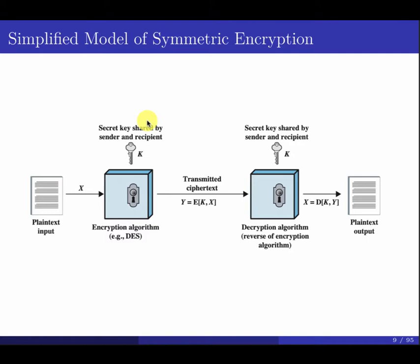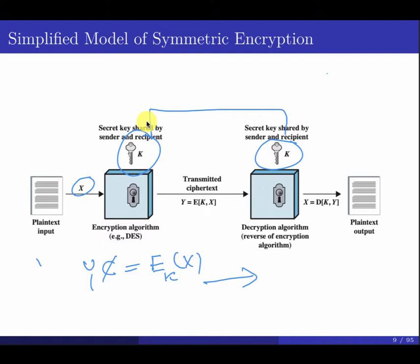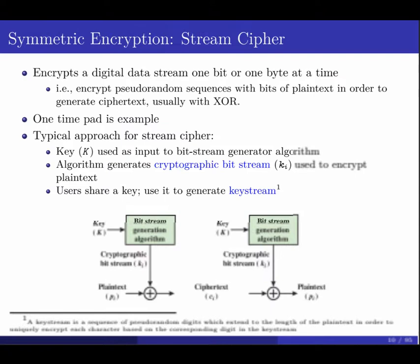Let's look at how the message exchange works. You take the message X, encrypt it using the key — the key must be shared beforehand — and produce ciphertext Y. You send Y to the other side, which reverses the operation using the same key to decrypt and recover the original message. I keep switching between X, P, and M for plaintext — I really need to update these slides to use one consistent letter.